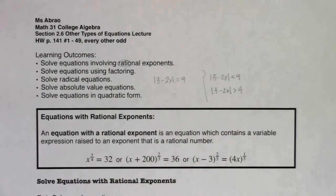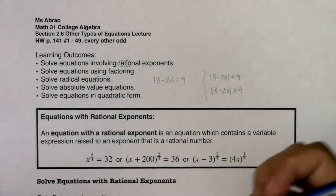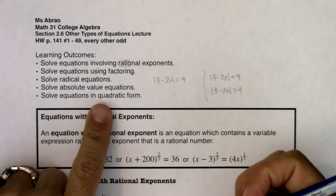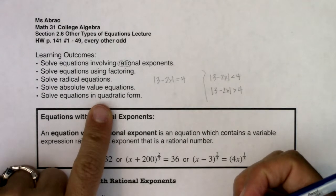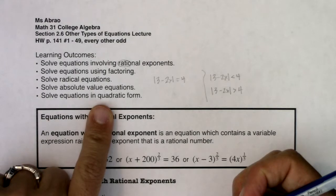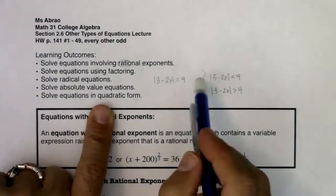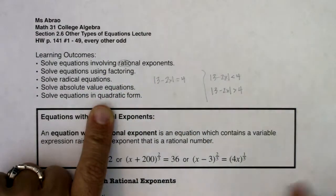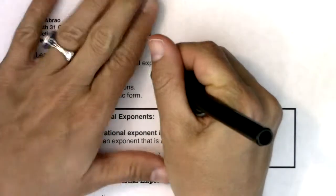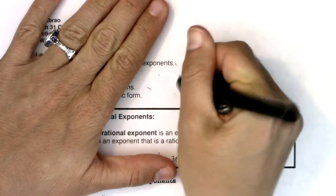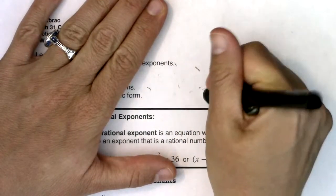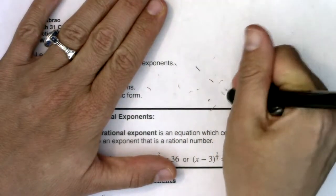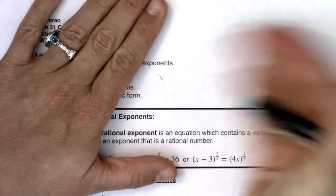The last thing we'll do in this section is solve equations in quadratic form — meaning these equations don't initially look like a quadratic equation, but we're going to do some substitution to make them look like one. Now I'm going to erase this and review the first learning outcome a bit before we get to example one.